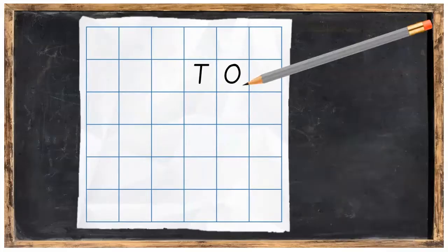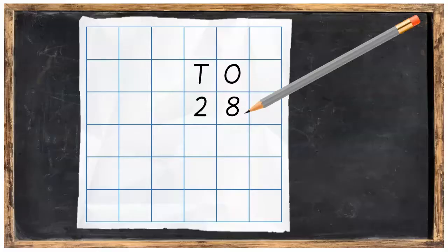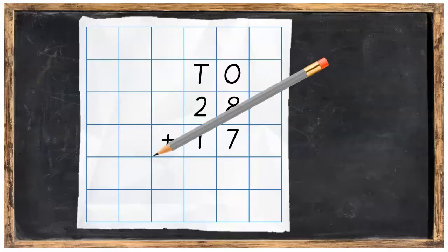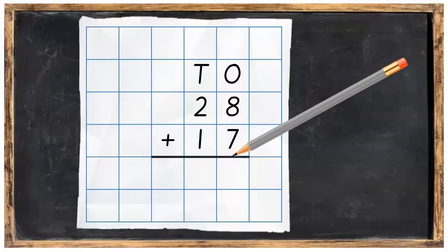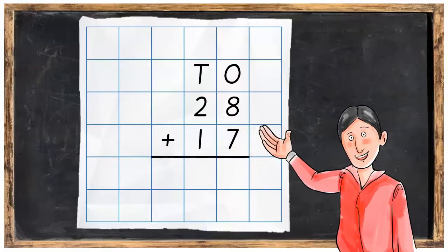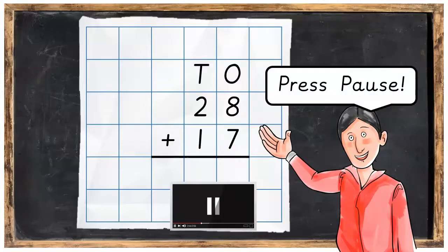The first thing I'd like you to do is put in the T and O for tens and ones, or units as some people like to call them. Underneath that, put in 28 plus 17. Don't forget to draw your line underneath the sum. Get that much done by writing out your sum just like this. Press pause and when you're ready, press play again.